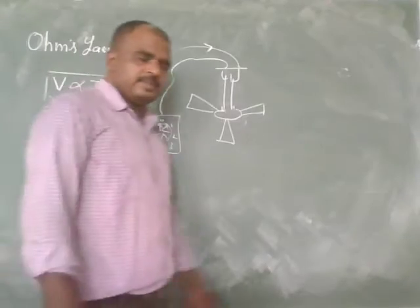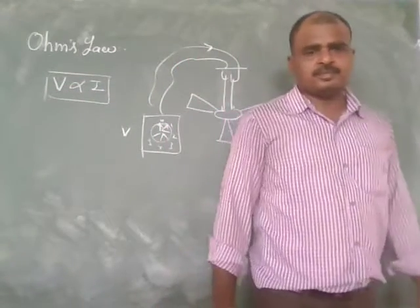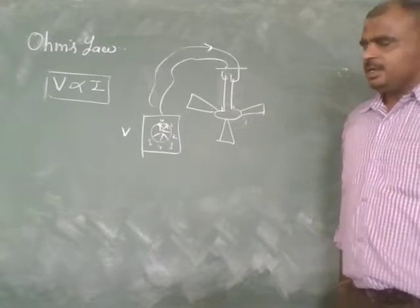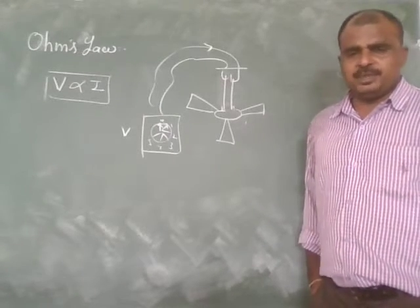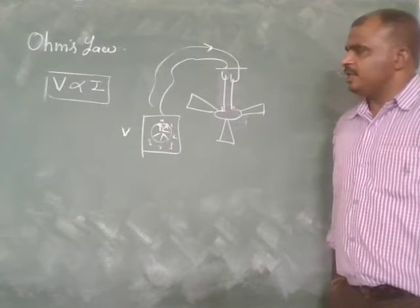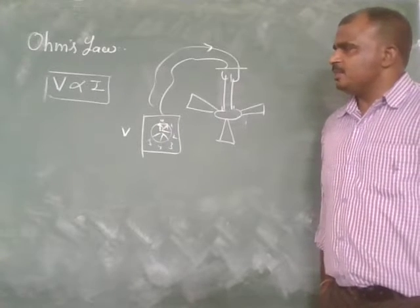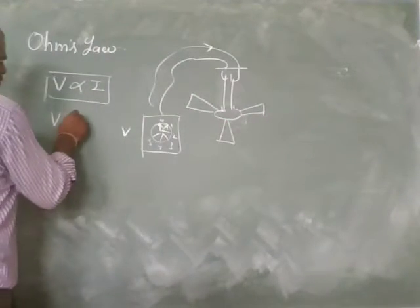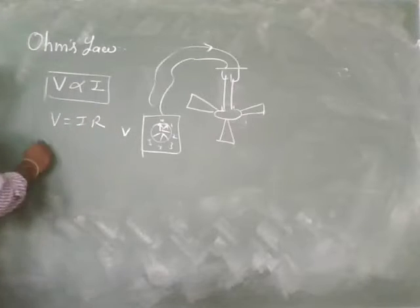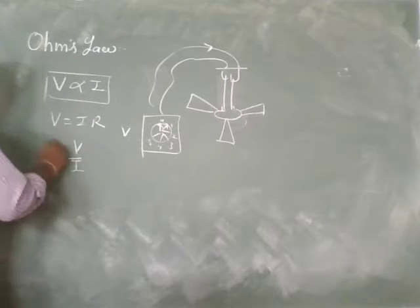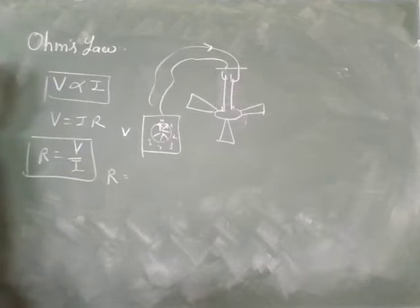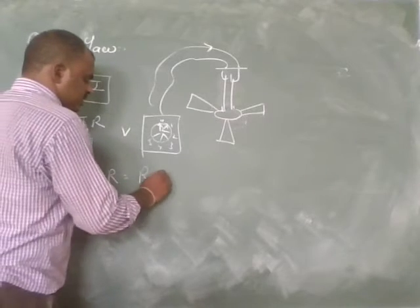That means potential difference is directly proportional to current. This is Ohm's Law. So according to Ohm's Law, at constant temperature, potential difference V is directly proportional to current I. Or V equals IR, or R equals V upon I. R is a constant which is known as resistance.